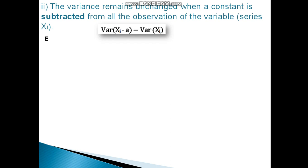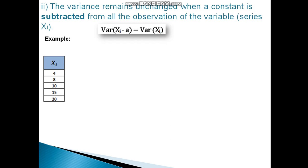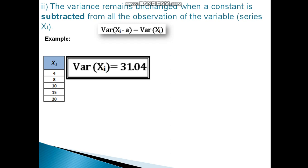We use the same example: Xi equals 4, 8, 10, 15, 20. The variance was 31.04. Now we subtract the constant a equals 2, defining yi equal to xi minus a.